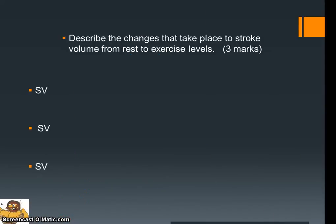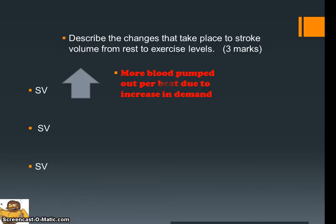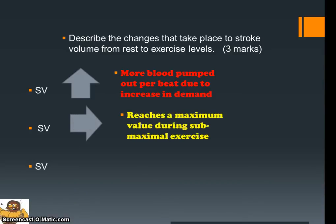In this section we'll quickly look at how this knowledge manifests in an exam question. The question is: describe the change that takes place to stroke volume from rest to exercise levels — potentially three marks. Stroke volume would increase because more blood is being pumped out per beat due to an increase in demand. During sub-maximal exercise, your stroke volume reaches a maximum value — there's only so much blood the heart can push out, and at the absolute extreme, stroke volume is about 200 millilitres, so there's a finite level you can't exceed.